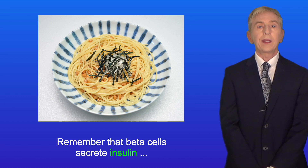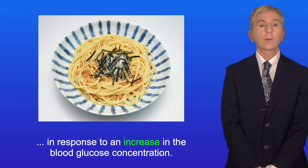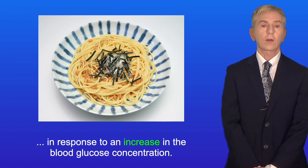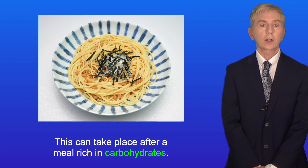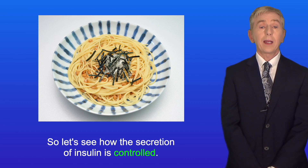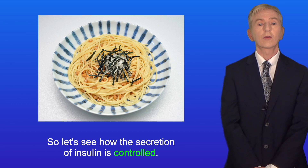Remember that beta cells secrete insulin in response to an increase in the blood glucose concentration. This can take place after a meal rich in carbohydrates. So let's see how the secretion of insulin is controlled.